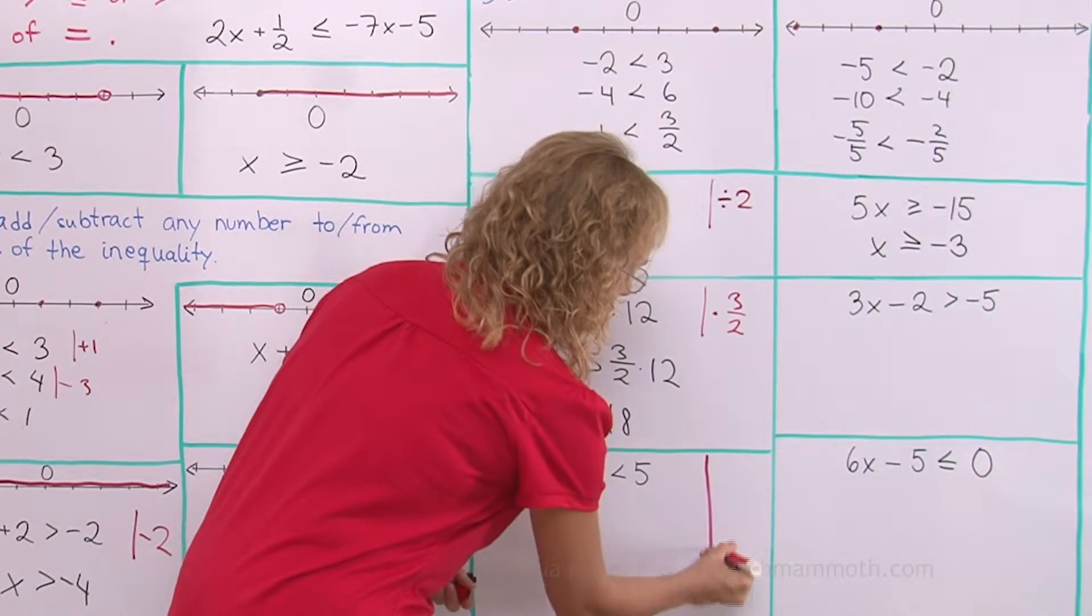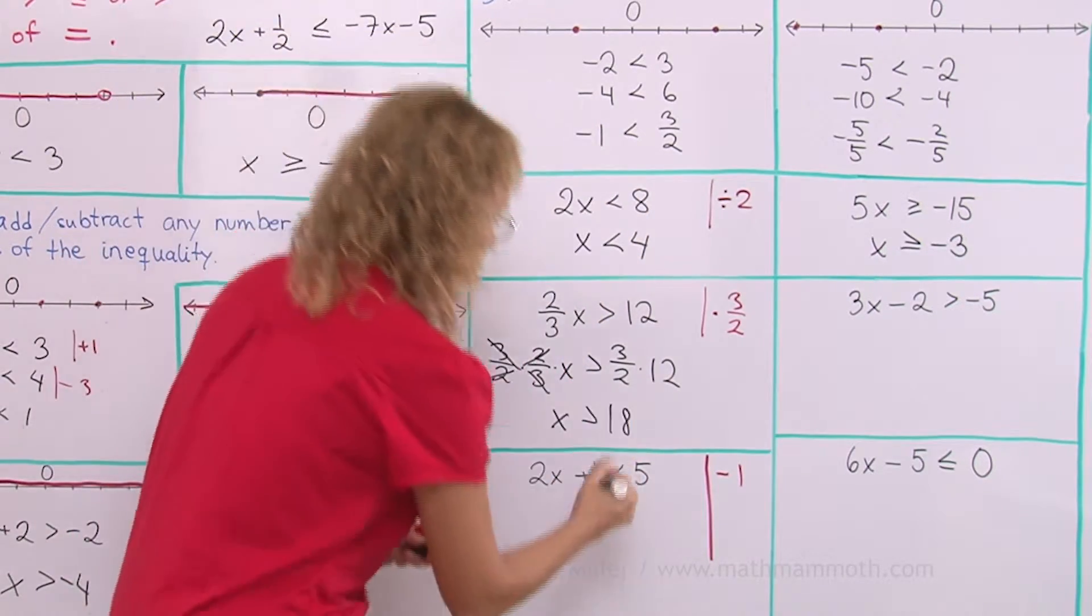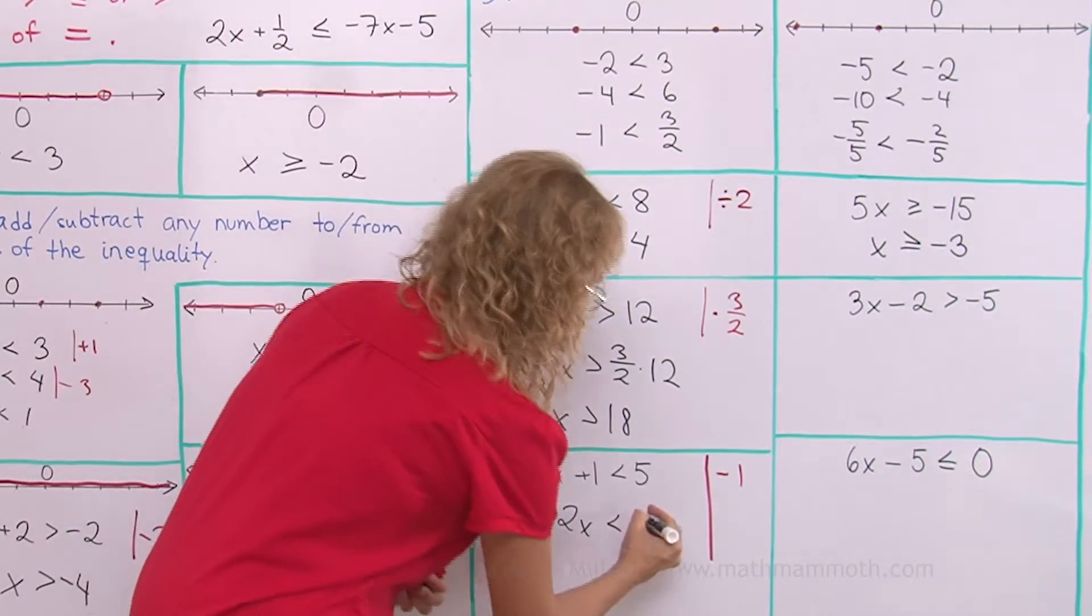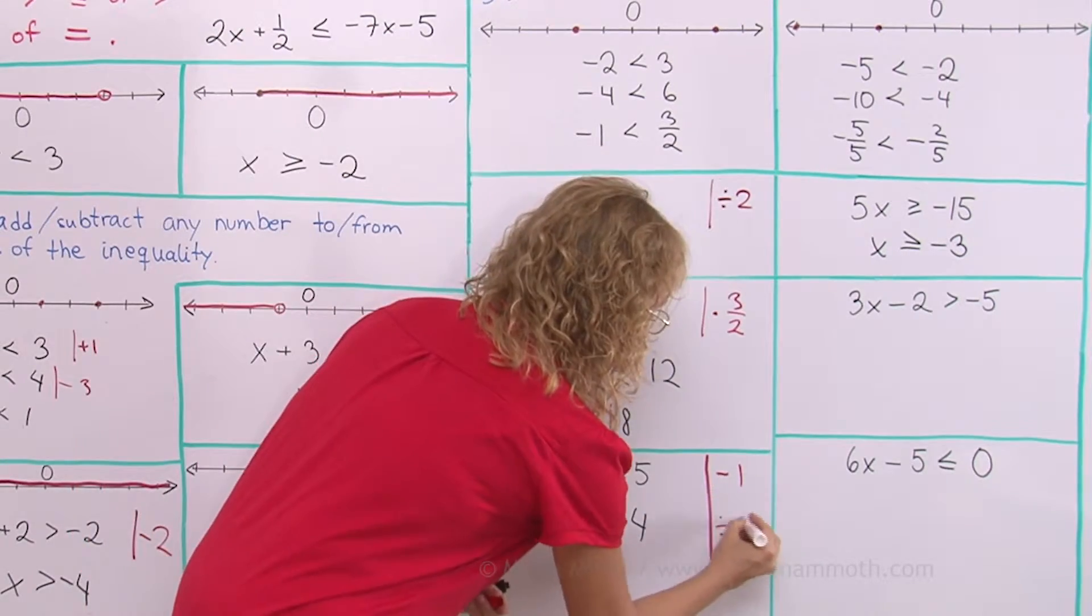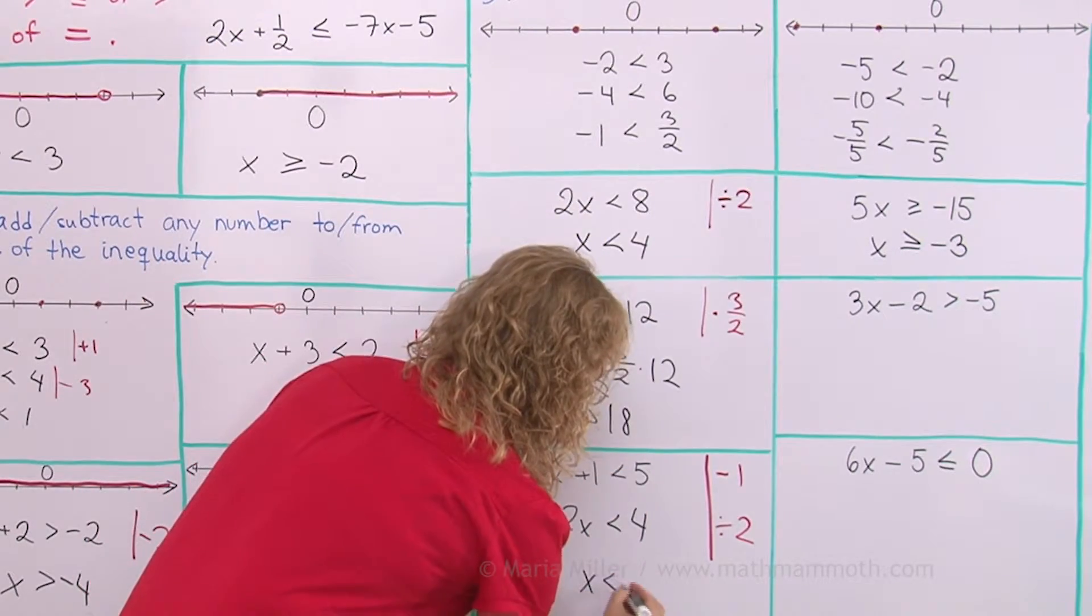My first step is to get rid of this plus 1. And so I subtract 1 from both sides. And I get 2x alone here, less than. Then 5 minus 1 is 4. And the next step is easy. Divide both sides by 2. And we get x less than 2.